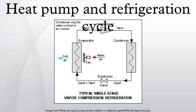Figure 1 provides a schematic diagram of the components of a typical vapor compression refrigeration system. The thermodynamics of the cycle can be analyzed on a diagram as shown in Figure 2. In this cycle,